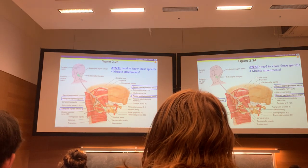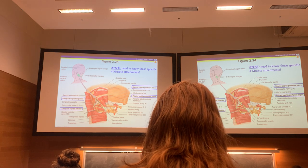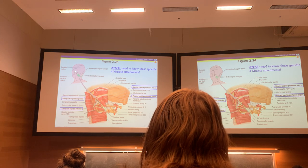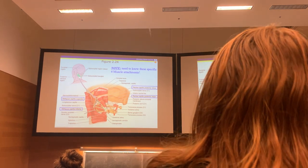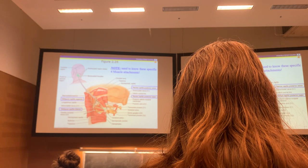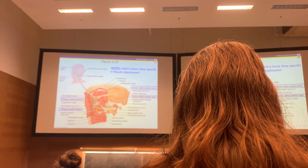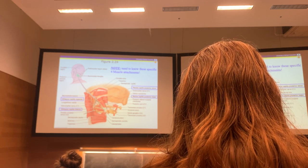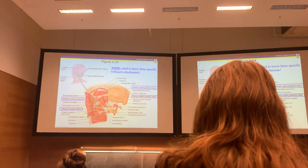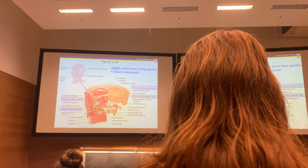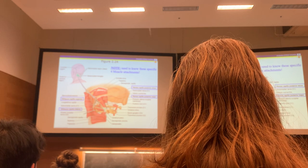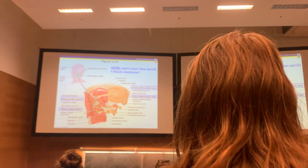These suboccipital muscles - you need to know their specific muscle attachments. There are four little muscles in the suboccipital region, basically behind your ear, just below the occiput, involving C1 and C2. That's why they're important. You do a lot of really intricate stuff with your head - very small amplitudes of movement. They're also very postural, keeping the relationship between C1 and C2. If they get out of whack, you can have a lot of pain and a lot of control problems and migraines. So these are important muscles.